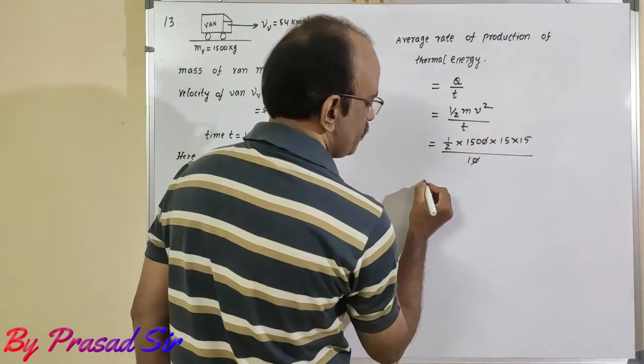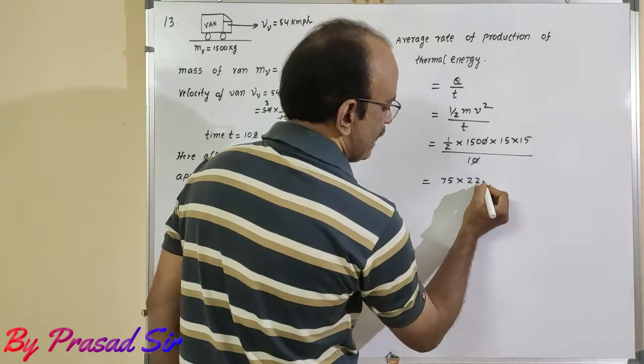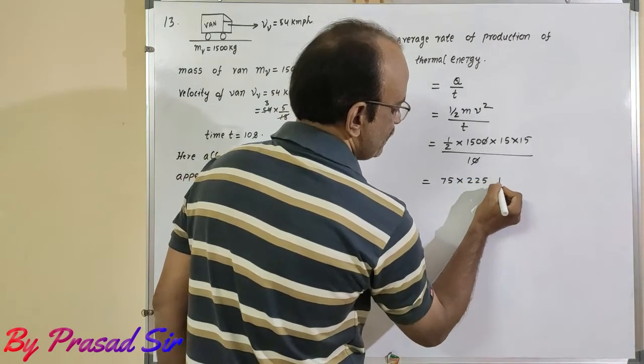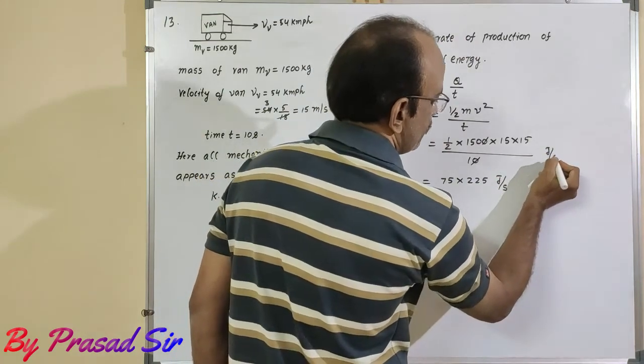Cancel the 10. 75 into 225. This is joule per second.